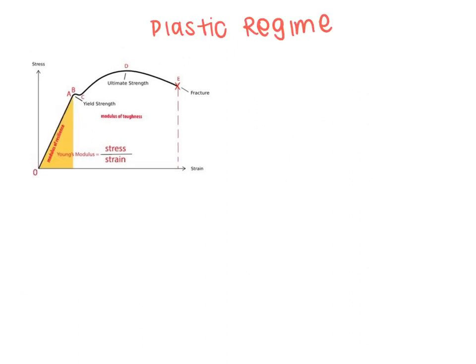There's going to be a point where we leave the elastic regime if you pull too hard, and that point is called the yield strength - the point where the material is leaving the elastic regime.